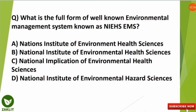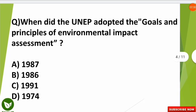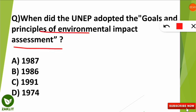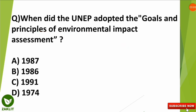The next question is: when did UNEP adopt the goals and principles of Environmental Impact Assessment? The correct option is A. In the year 1987, UNEP adopted the goals and principles of Environmental Impact Assessment (EIA).